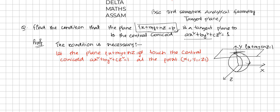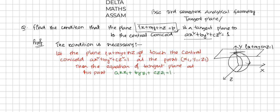Then the equation of the tangent plane at this point would be: ax·x1 plus by·y1 plus cz·z1 equal to 1. So the tangent plane equation at the particular point (x1, y1, z1) is ax·x1 plus by·y1 plus cz·z1 equal to 1.